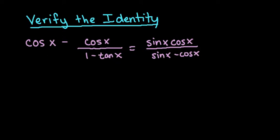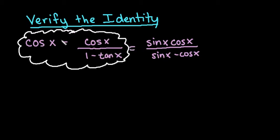What I tend to do is when I look at the problem, I look for the more complicated side to see if I can simplify the more complicated side down into the opposite side. So I'm going to start with the left-hand side and try to see can I get this expression to equal sine x cosine x over sine x minus cosine x.